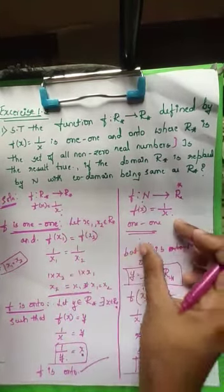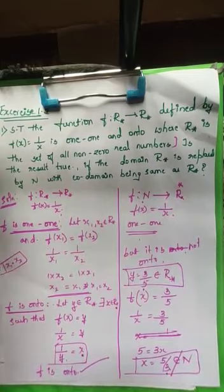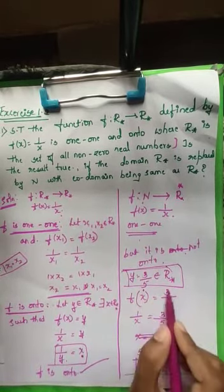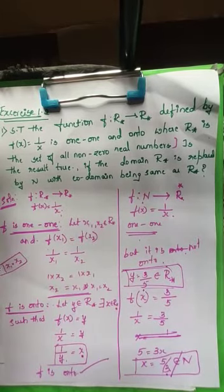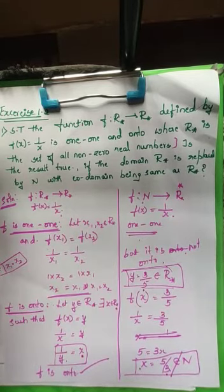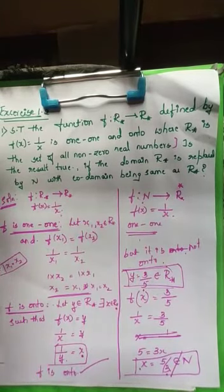Therefore the given function f from N to R* is not onto. For one-one, you write the same proof as before. For onto, you take a counter-example — take any fraction from the co-domain and check whether its pre-image belongs to N. Here the co-domain is not equal to the range. We found an element whose pre-image does not exist in the domain N. I hope you are clear. Thank you.